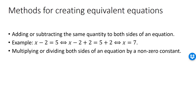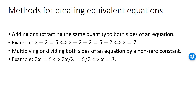Another way to create an equivalent equation is to multiply or divide both sides by a non-zero constant. For example, in the equation 2x equals 6, dividing both sides by 2 cancels the 2 on the left-hand side, leaving the solution x equals 3.